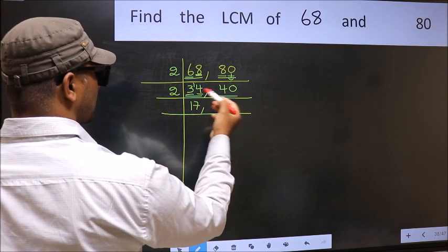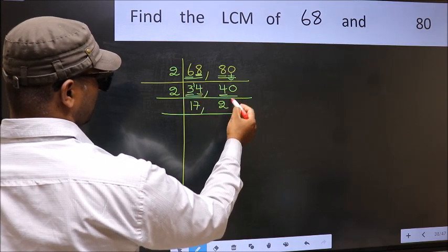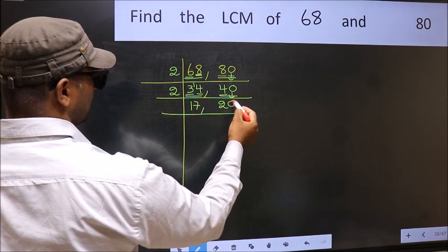The other number 40 is divisible by 2. First number 4, when do we get 4 in 2 table? 2, 2 is 4. This 0 as it is down.